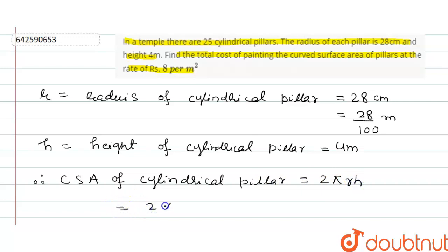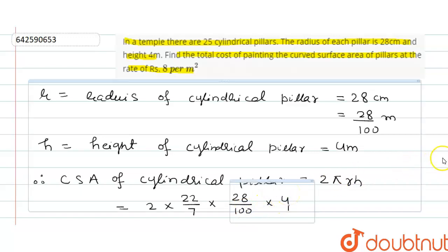We know the value of r and h, so put them in the formula: 2 times 22 upon 7 into 28 upon 100 for radius, and 4 for the height.